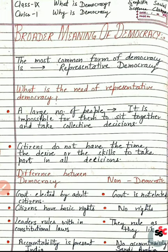इसमें लोगों को कौन रूल करता है? Government. और government कौन बनाते हैं? जिन representatives को हमने elect किया होता है। यहाँ पर directly participation नहीं होता है — यह direct democracy नहीं है, एक तरह से indirect democracy है, जिसमें हम अपने representative choose करते हैं जो हमारी needs और aspirations के according हमारी behalf पर government को चलाते हैं और लोगों के लिए काम करते हैं।